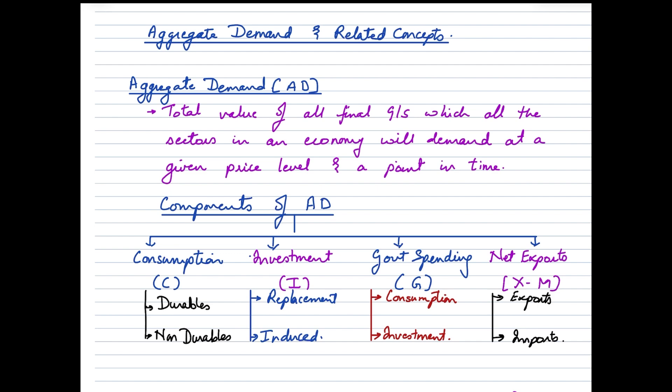When we talk about investment, investment could be done in two categories. The first is replacement where the firms would be taking care of the existing capital stock and they would be paying up for their maintenance. Whereas induced on the other hand would be incurred when the firms would be looking forward to spend more on equipments and machinery so as to increase their productivity to cater to ever increasing demand.